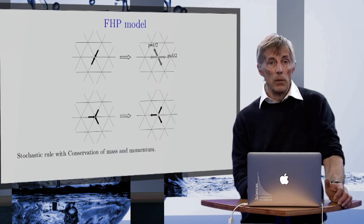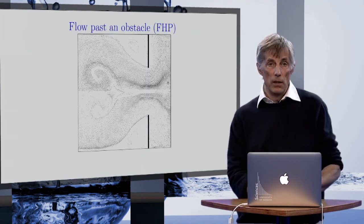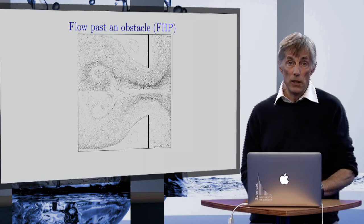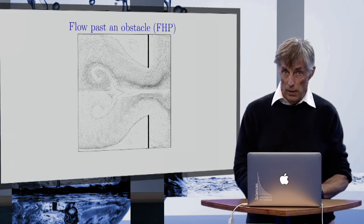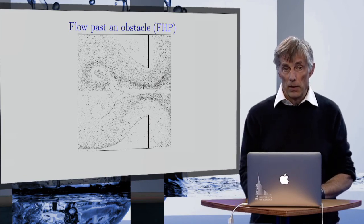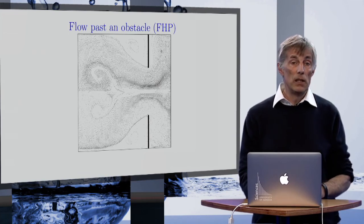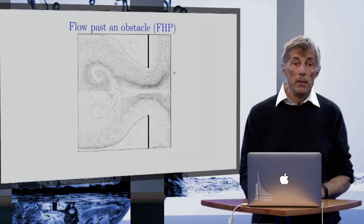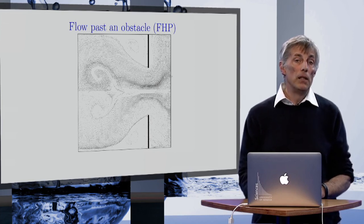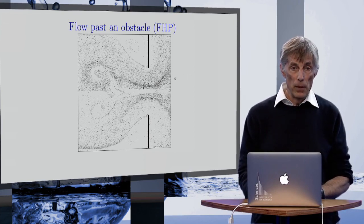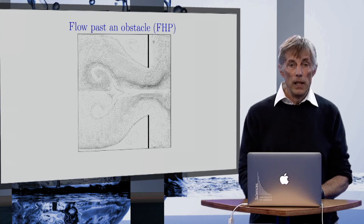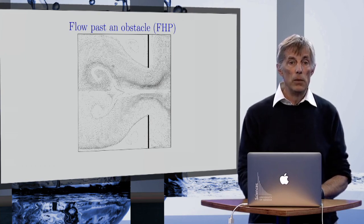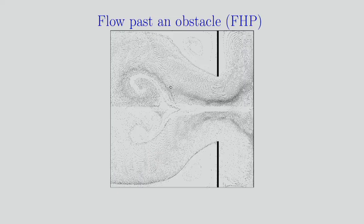For the rest I will focus on the HPP model because it's easier to introduce the math. But first I just would like to show you what happens if you use this FHP model with a lot of particles and you impose some speed of those particles from the right boundary.